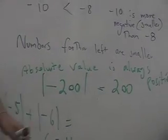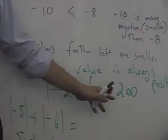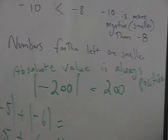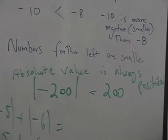Absolute value is always positive. The absolute value of negative 200 is equal to 200, okay? Think of some examples of where absolute value is used in life. Anybody? Omabe.